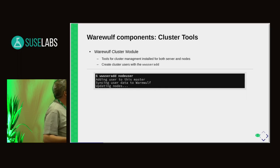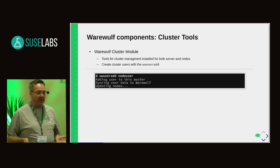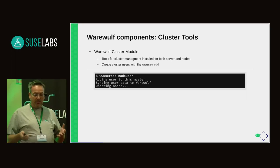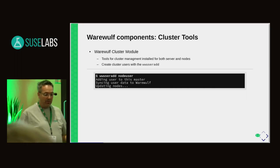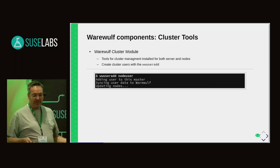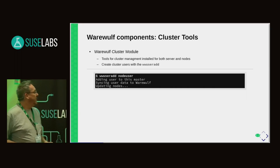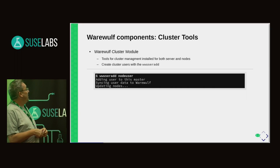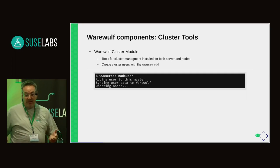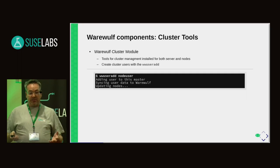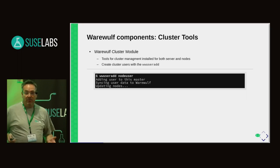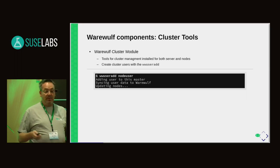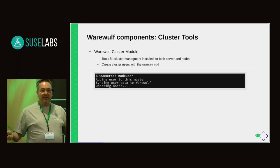One of the primary modules within the Werewolf system is called the cluster module. Its purpose is simply to provide master and node functionality. Files installed within the node allow it to communicate to the master and provide information. The master also provides functionality such as adding users not just to a single system but to the entire cluster using WWuseradd, which manipulates several files to make a user exist cluster-wide.